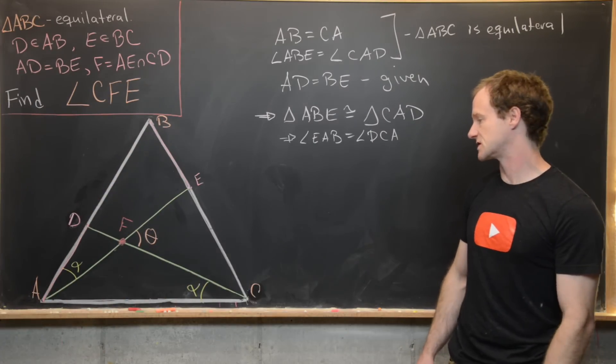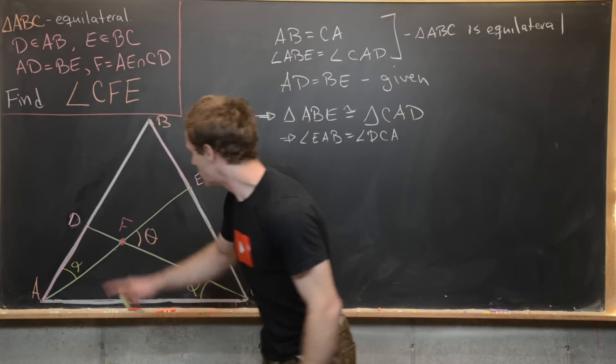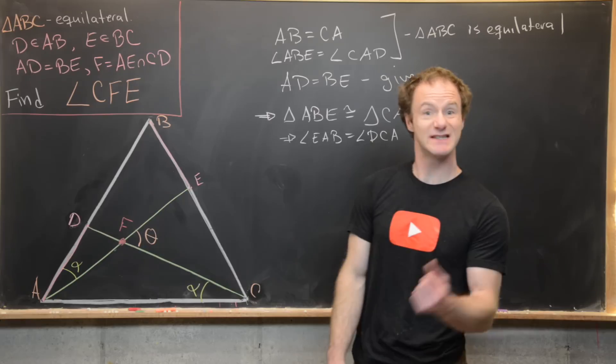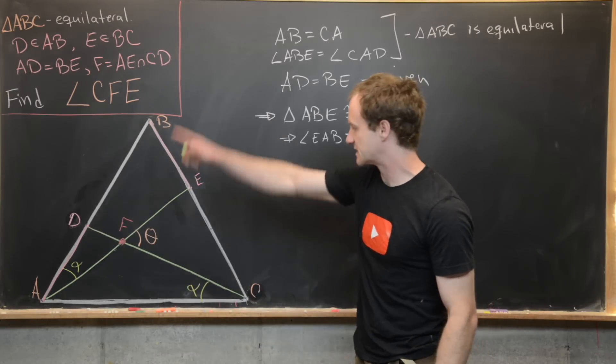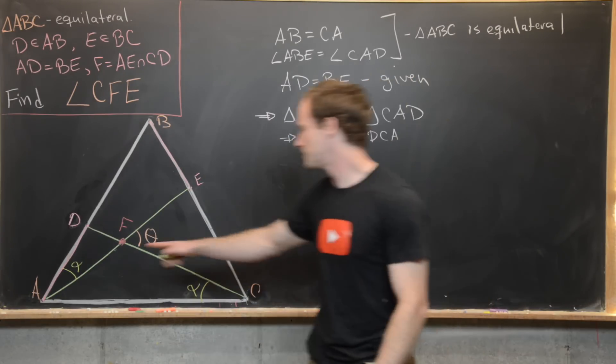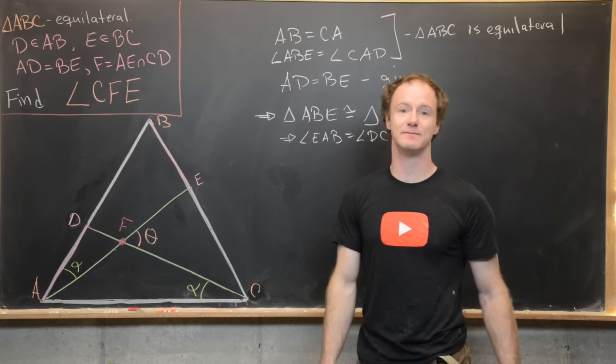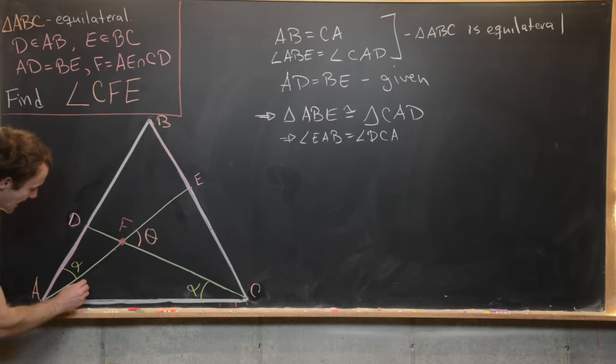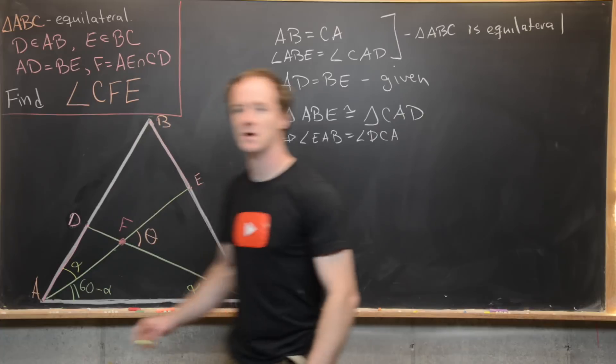And now we're ready to start finishing this off. So notice that we know that this entire angle here DAC is going to be 60 degrees. That's because this whole triangle is equilateral. This portion of the angle has measure alpha. But that's going to tell us that this portion of the angle has measurement 60 minus alpha.